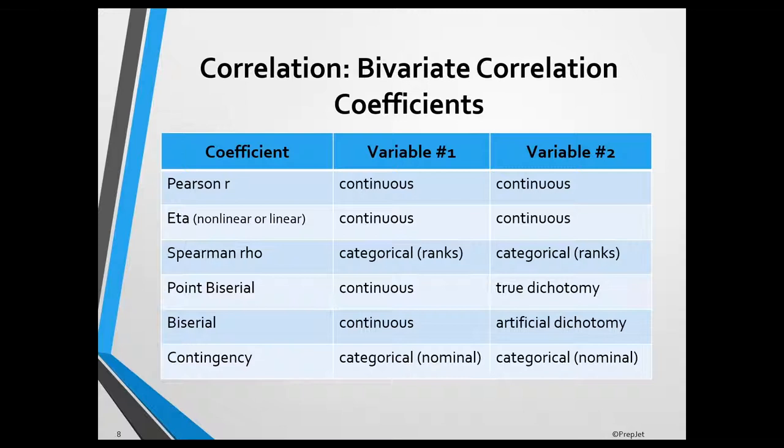The point-biserial correlation coefficient is used when one variable is continuous and the other is a true dichotomy. The distinction between a Psy-D and a PhD degree is a true dichotomy, and the point-biserial correlation coefficient would be used to determine the correlation for EPPP score and type of degree.